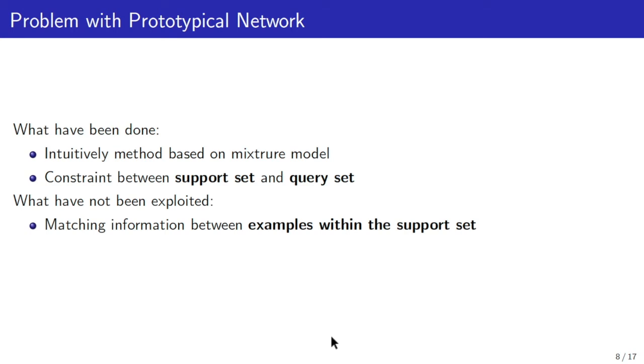Even though prototypical network is a successful model because of its clear intuition and relies on well-studied theory, its training signals come from the constraint between support set and query set only. Whereas, as presented before, the support set is a set of well-classified examples. The mutual information between examples in the support set should be exploited and this may be beneficial to the problem in which the training data is limited, similar to the case of event classifications.